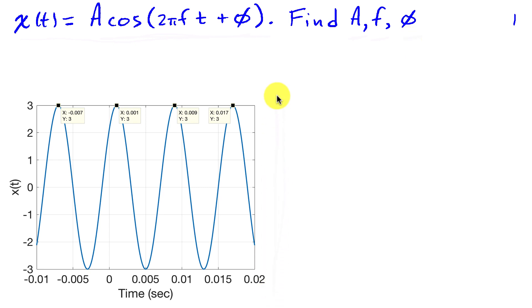Now I've used the data cursor in MATLAB to highlight the positive peaks, and so x refers to the time at which the peak occurs, that's the x-axis, and this y value tells me the height of that peak. So we have a height of 3, and that occurs at negative 0.007 seconds, 0.001 seconds, 0.009 seconds, and 0.017 seconds. Those are the four maxima that are shown in this section of the sinusoid.